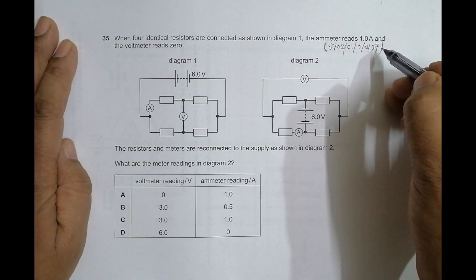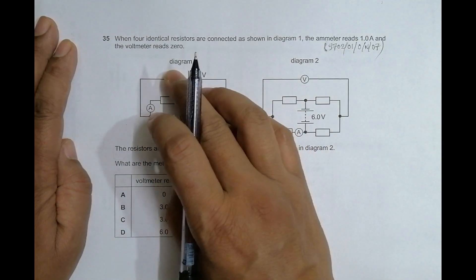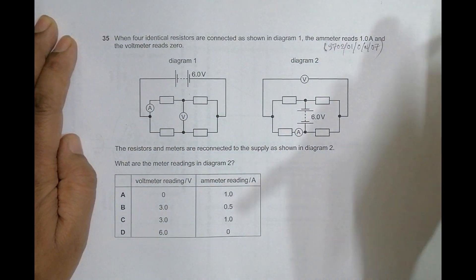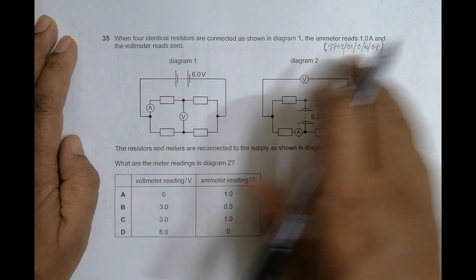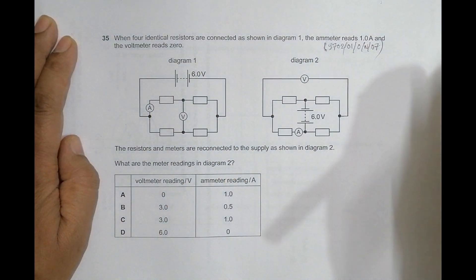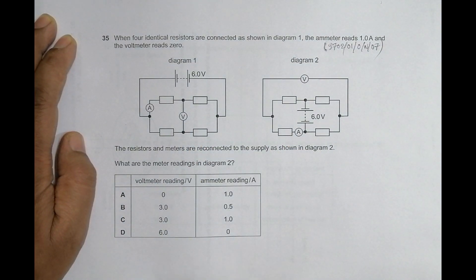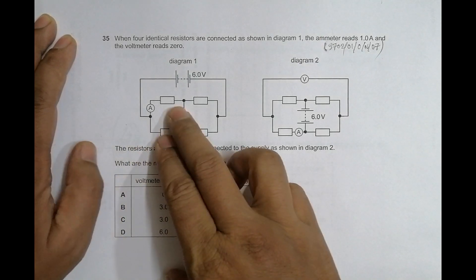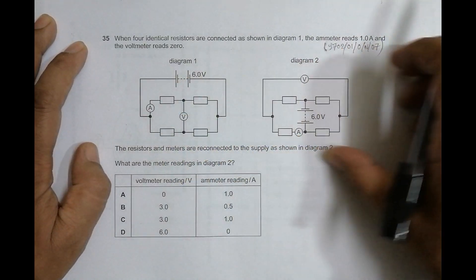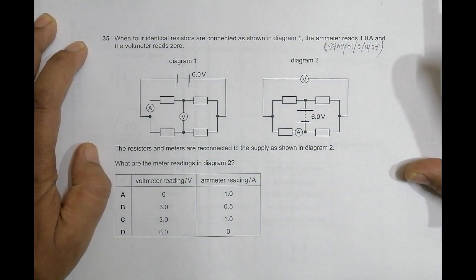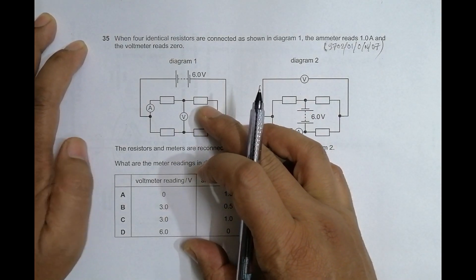Hello folks, today I have a question from the 2007 October/November Paper 1, question number 35. It is concerned with the chapter 'Current Electricity.' I really feel sorry that I missed doing this question. I have been asked by many students to post this — we did discussions in class about how to solve it, but making a video never came to mind. Today I accidentally had a glance at this question and decided it is now or never.